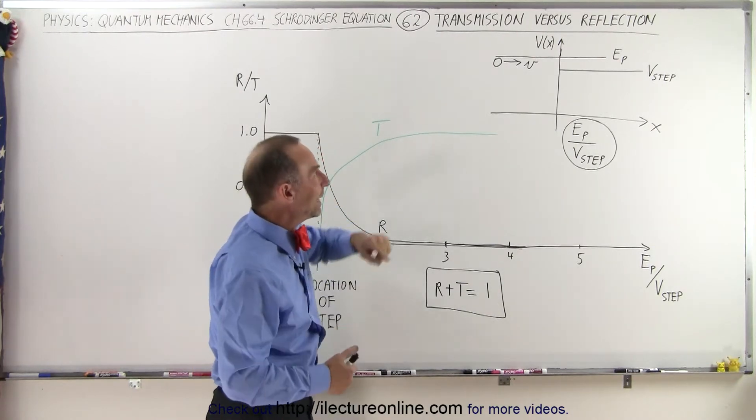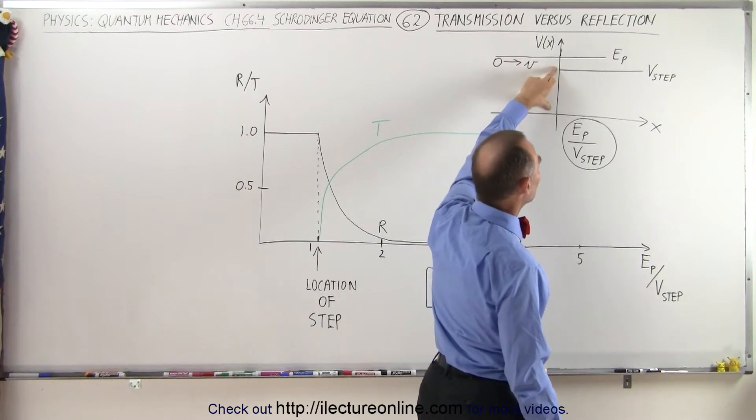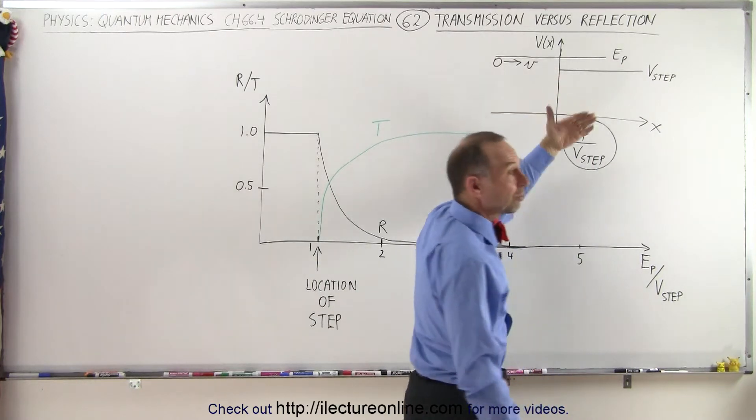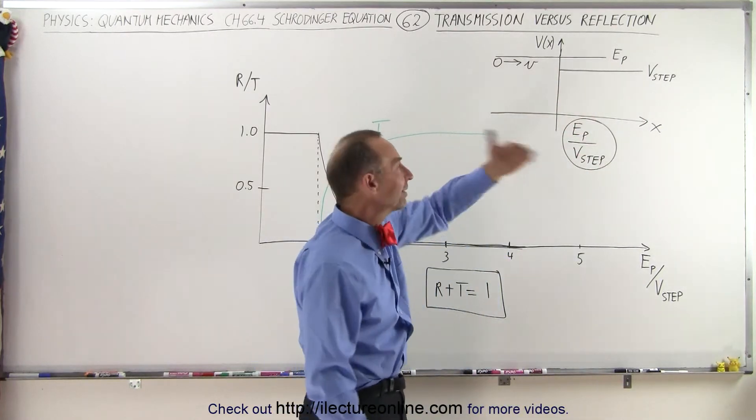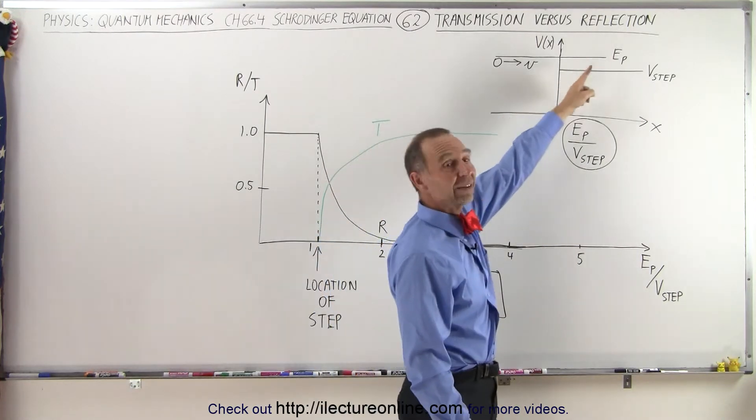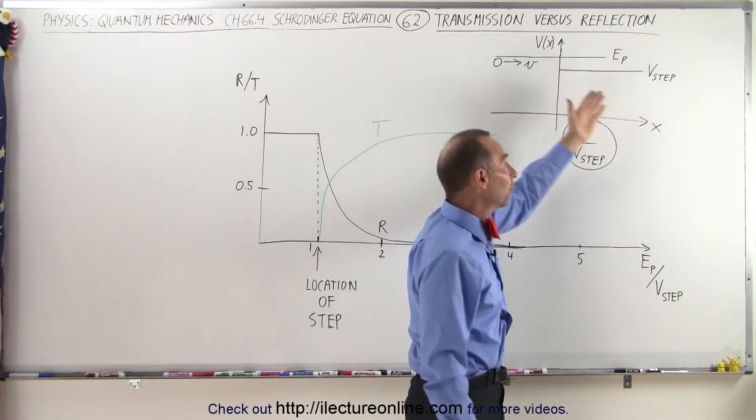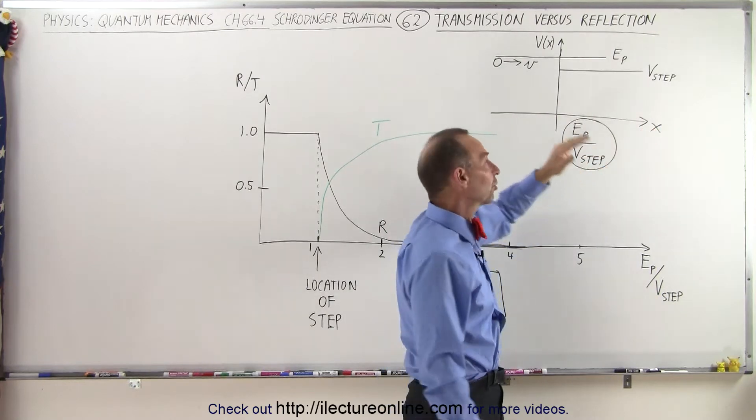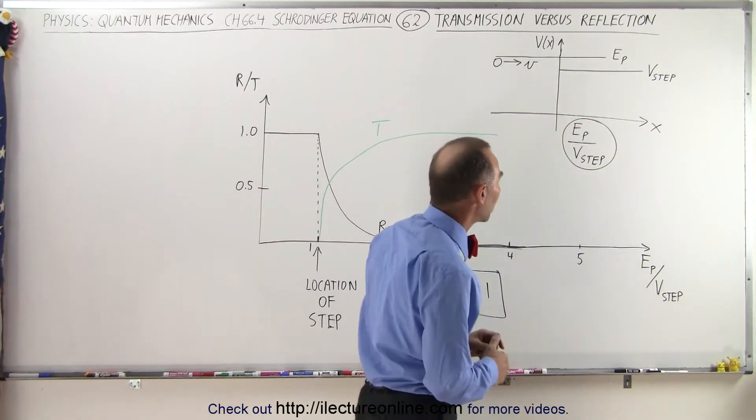In the regular world, in the macro world, any time the energy of the particle is greater than the potential of the barrier or the potential of the step, the particle will simply continue, perhaps with less energy, going slower, but we would expect 100% of the particles to continue past the step or past the barrier.